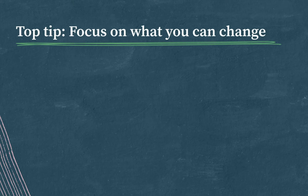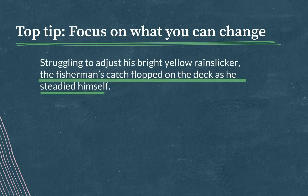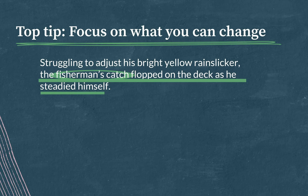Watch: 'Struggling to adjust his bright yellow rain slicker, the fisherman's catch flopped on the deck as he studied himself.' The target of the modifier is the fisherman, who is struggling to adjust his rain slicker — but as written, the sentence tells us it was the fisherman's catch that was struggling, not the fisherman. This is talking about a fish wearing a raincoat, and that means we need to fix the target.